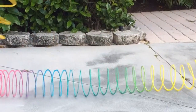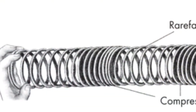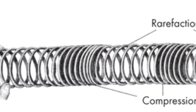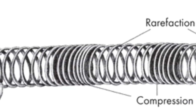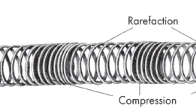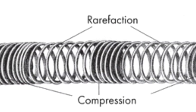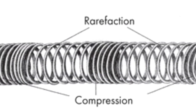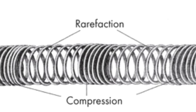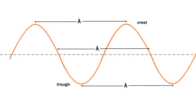When using a slinky, you can see the rarefaction and compression taking place. You probably don't know what those two words mean. Rarefaction is the less dense region of a longitudinal wave where the coils are more spread apart, and compression is the denser region of a longitudinal wave where the coils are more compressed together.